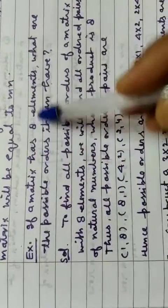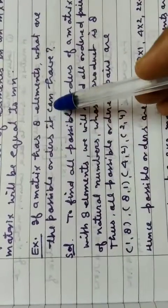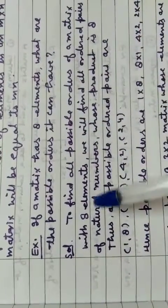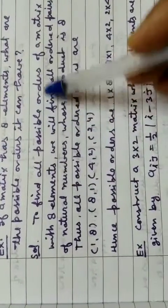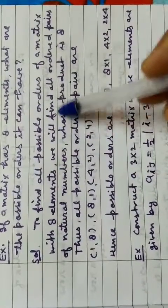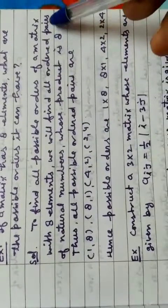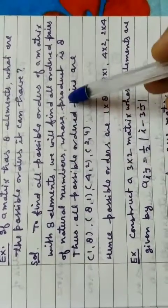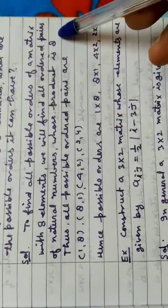Example: if a matrix has 8 elements, what are the possible orders it can have? To find all possible orders of a matrix with 8 elements, we will find all ordered pairs of natural numbers whose product is 8.